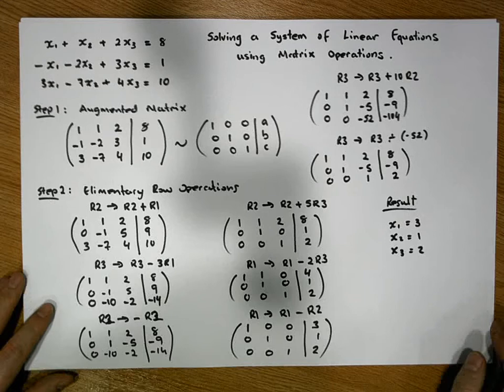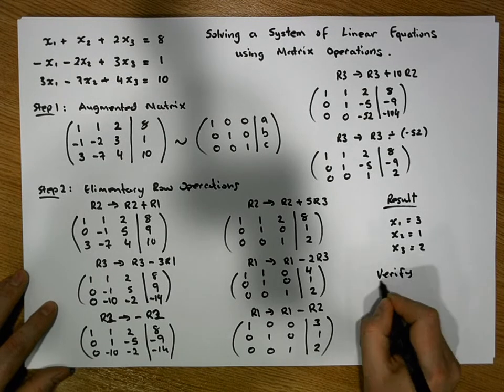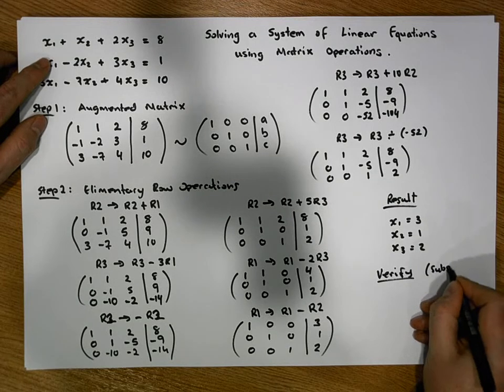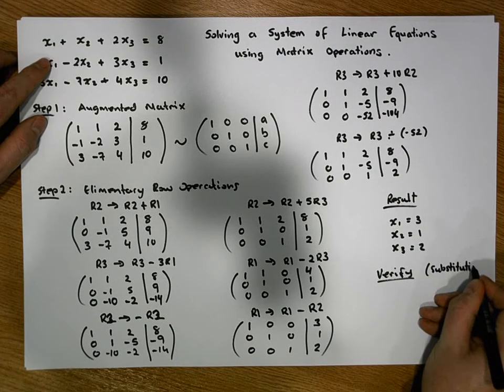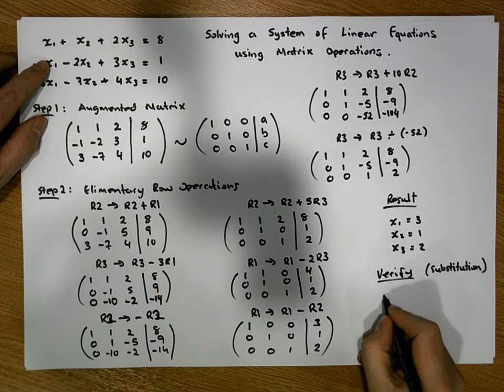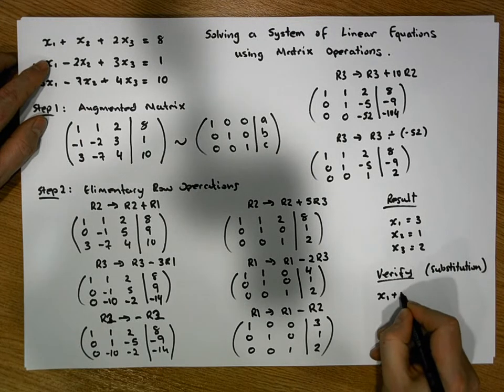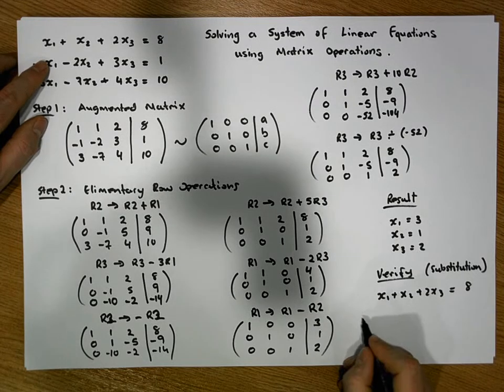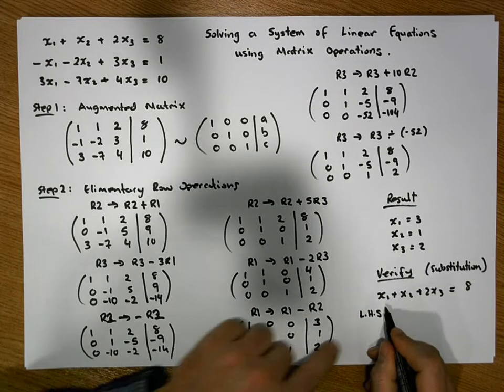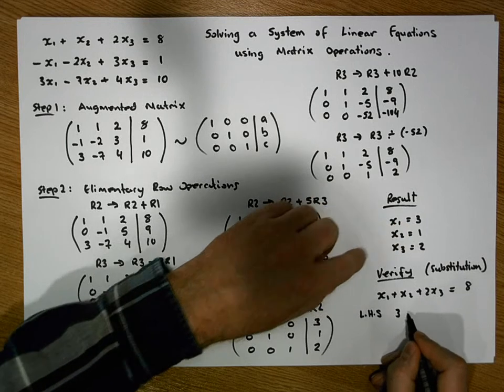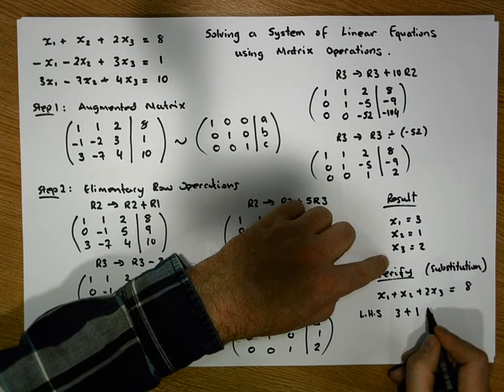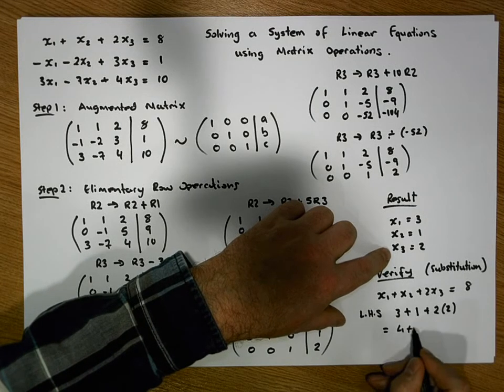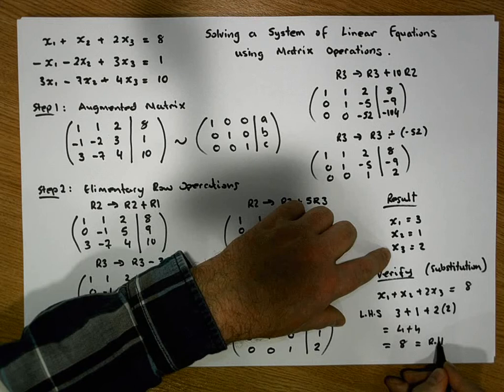And we can verify this. You can verify it in all cases, but we'll just verify it by making a substitution. So by substitution, by substituting into the first equation. The first equation is x₁ plus x₂ plus 2x₃ must be equal to 8. So taking the left-hand side of this equation, we have x₁, which is 3, plus x₂, which is 1, plus twice x₃, which is twice 2, and that gives us 4 plus 4, which gives us 8, which is equal to the right-hand side, as required.